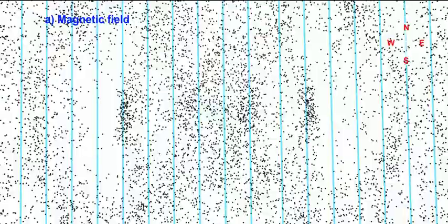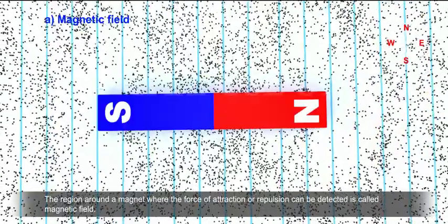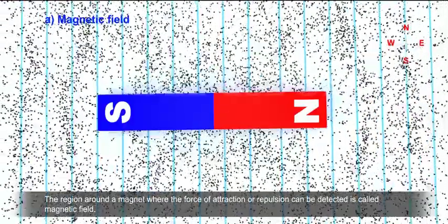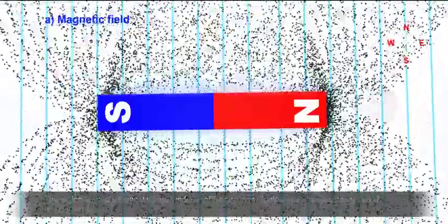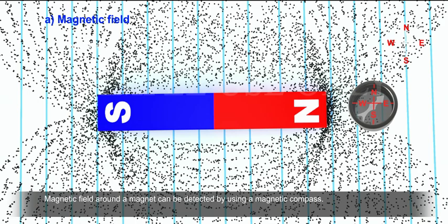A. Magnetic Field. The region around a magnet where the force of attraction or repulsion can be detected is called magnetic field. Magnetic field around a magnet can be detected by using a magnetic compass.